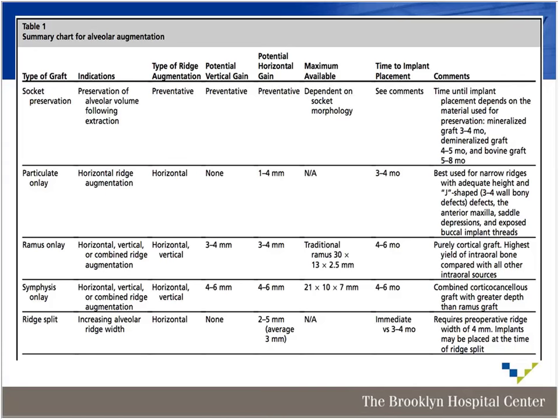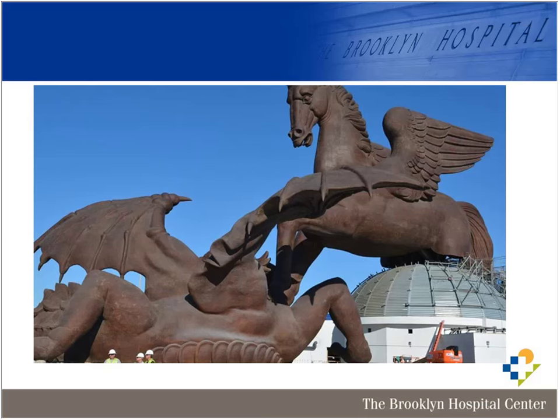How long do you wait between placement of particulate bone and placing an implant? With allografts, 3 to 4 months. Some feel that with bovine grafts, a slower-resorbing material, you should wait 5 to 8 months. I usually wait between 12 and 16 weeks, and I've never had a defect within that waiting period.